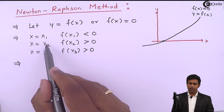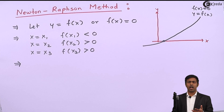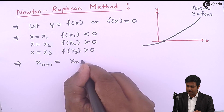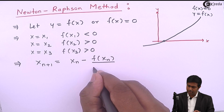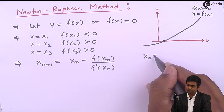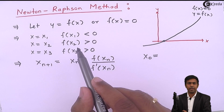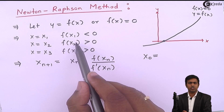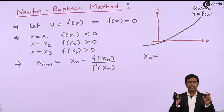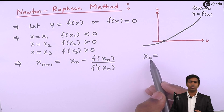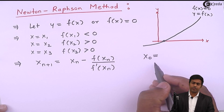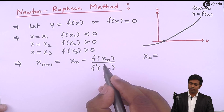We will consider that value as our initial root and start with the formula. The formula is x of n+1 equals x of n minus f of xn divided by f dash of xn. Whatever is the initial root we are considering, we call it x0. The root will be between the two x values where the function changes sign, and we take one of those values as x0.